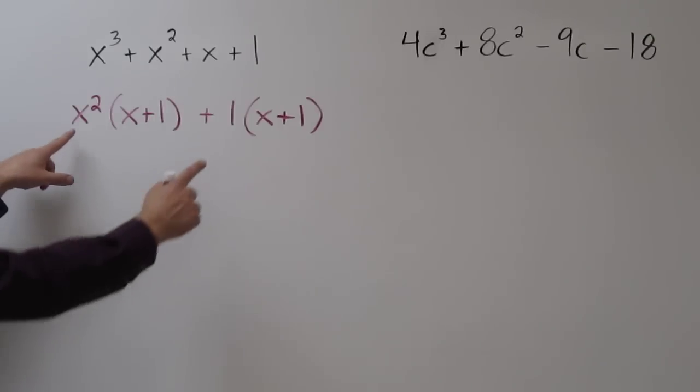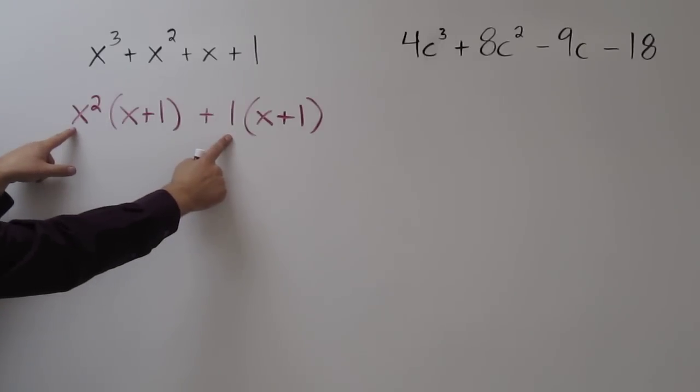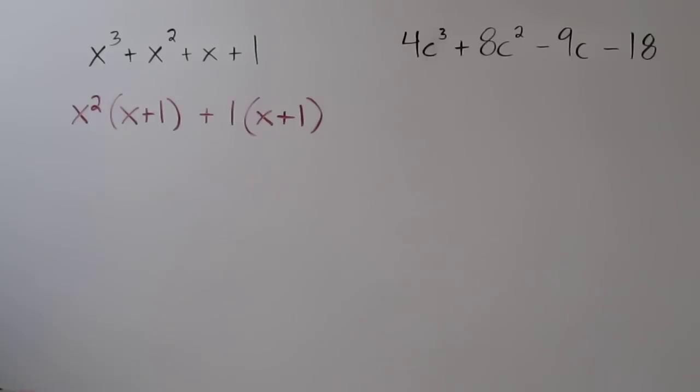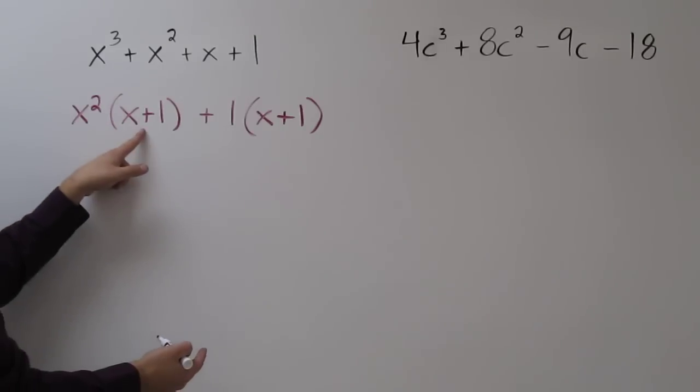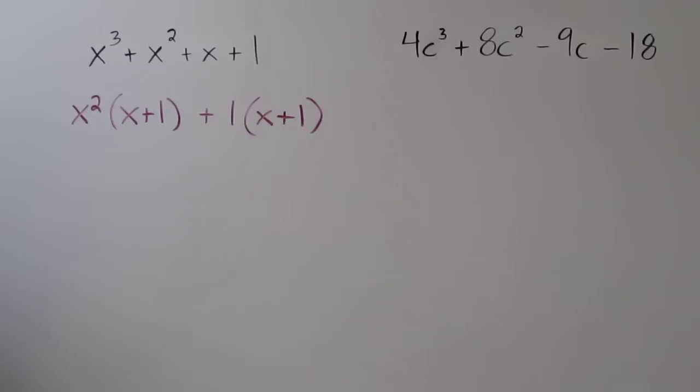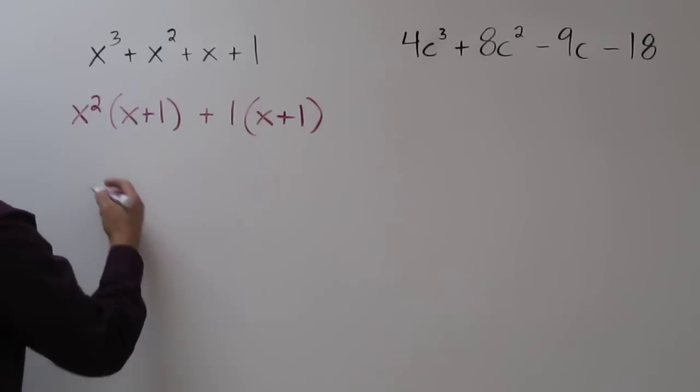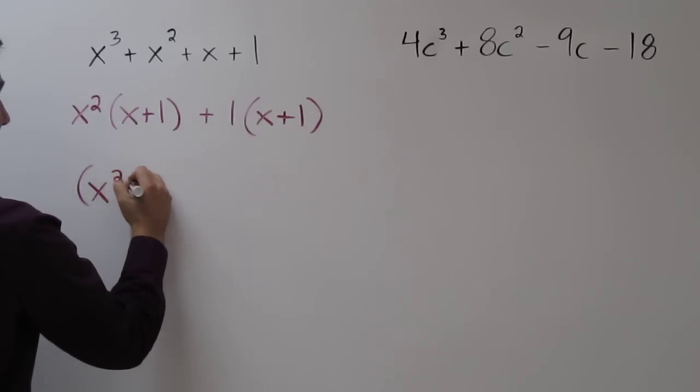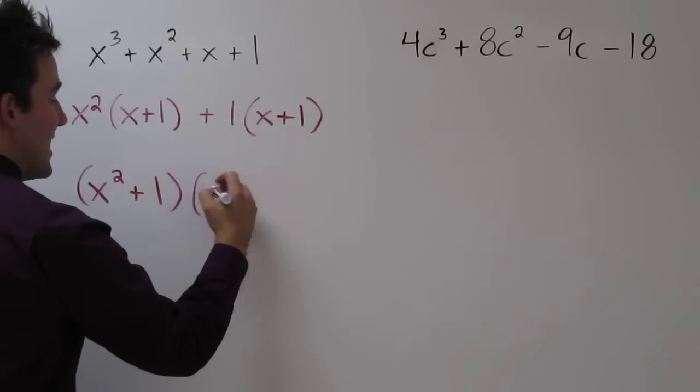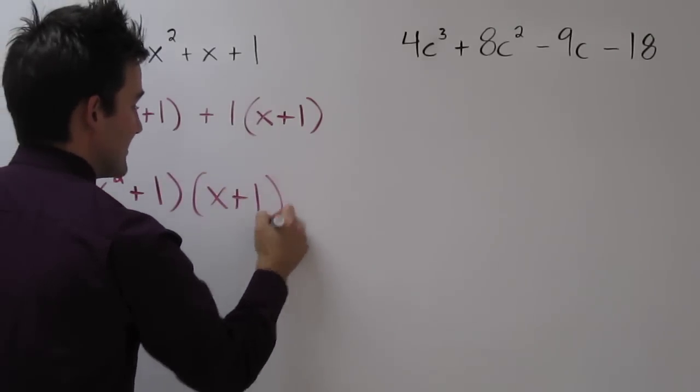Here's how it works. Each of these, x squared and 1, is being multiplied by the binomial x plus 1. That means using the distributive property, we can rewrite this factored as x squared plus 1 times x plus 1.